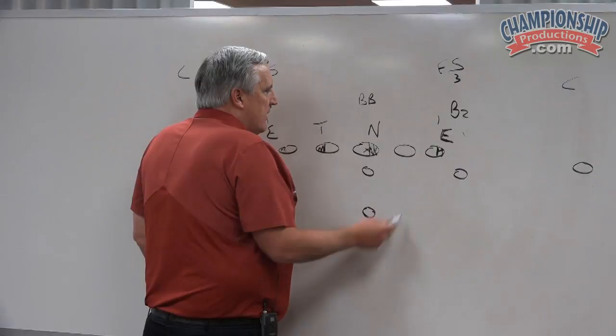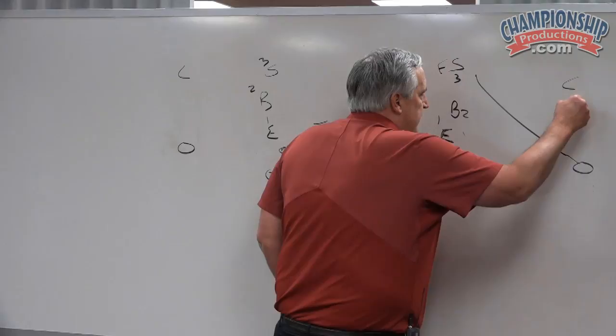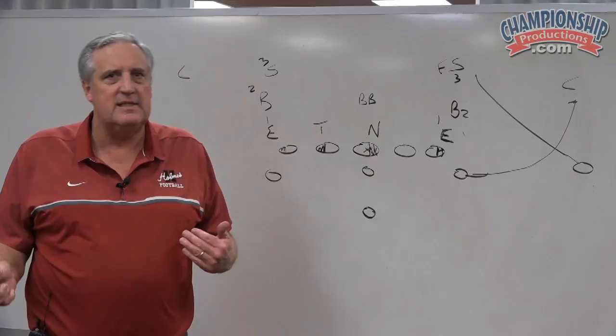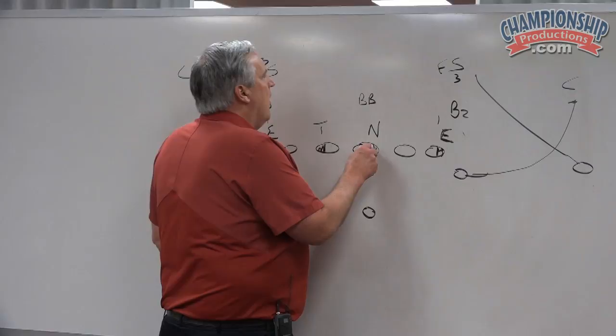Well, we first started saying we had to run the triple over here, the A-back, we have to arc. You can also crack it if you want to, if you don't have good arc blockers. So, we've got to read one, pitch off two. We've got the possibility of an area read where one takes the dive, two takes the quarterback, or two takes the dive, one takes the quarterback. You can have that.